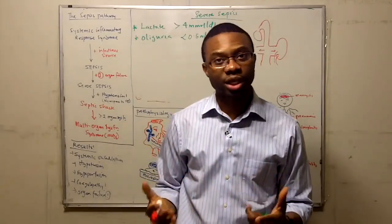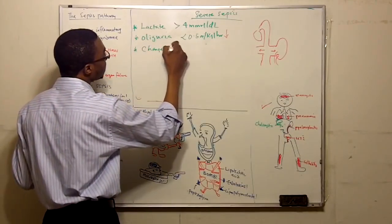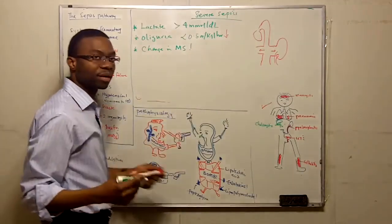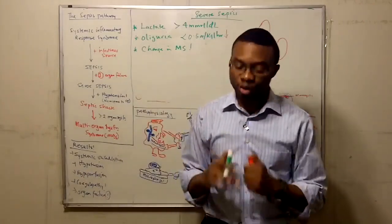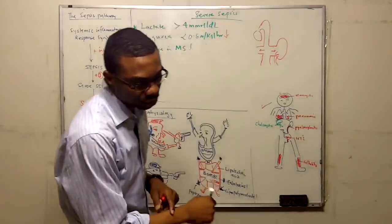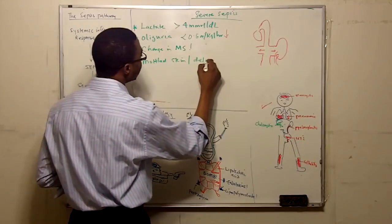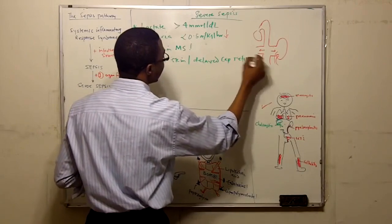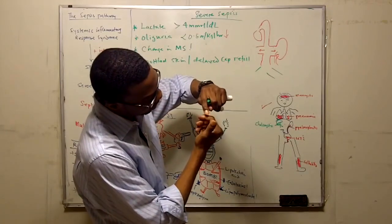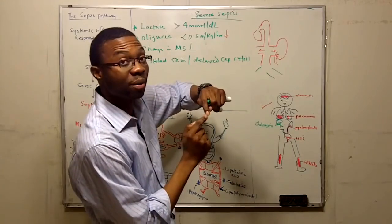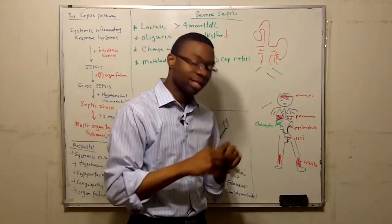You're going to develop an abrupt change in mental status. You're going to be confused, lethargic. You're not going to know what you're doing. Why? Because the systemic vasodilatation is decreasing perfusion to your brain. These patients also might develop mottled skin or delayed capillary refill. It's all from systemic vasodilatation. If I try to check your capillary refill, it should be nice and red. When I press it should be white. When I let it go, it should fill back within two seconds and be pink again. But because they have systemic vasodilatation, you're not going to get back. It's going to be delayed.